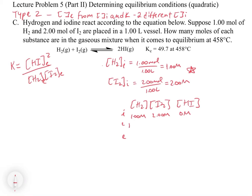So in this case we're going to have minus x, minus x, and plus 2x. The stoichiometry is the same as the last one. So we're going to have 1.00 molar minus x, 2.00 molar minus x, and we're going to have 2x.